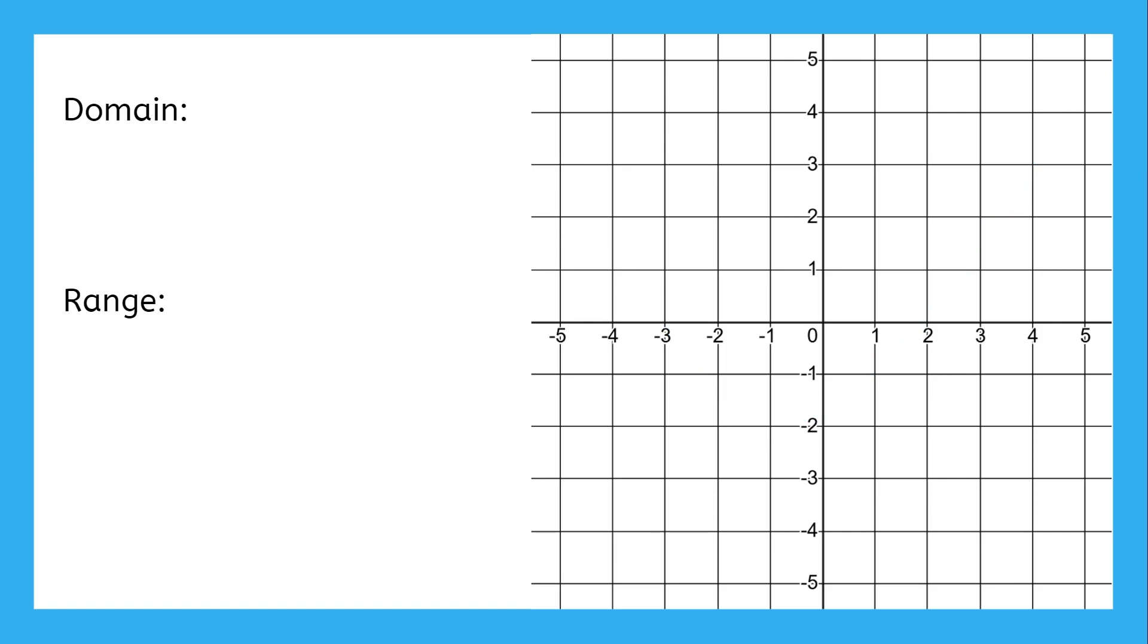However, even with continuous functions, sometimes values get skipped over. Take this function, for instance. We see that this function has empty points or holes in a couple of places.